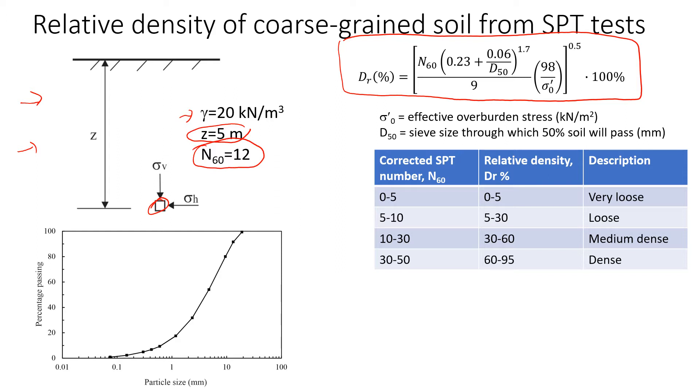So this value is already corrected. If you'd like to know how to correct N values from SPT test, please watch my other videos. And what we need to do is to estimate the relative density of this material. Relative density is very important because it shows the consistency of sand, if it's loose or dense or medium dense. It's very important for studies on liquefaction of sand or just to estimate the strength of this material.